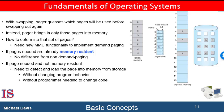We can use a valid-invalid bit scheme for this purpose. When the bit is set to valid, the associated page is both legal and in memory — previously valid just meant a legal address, but now valid means it is both legal and in memory. If the bit is set to invalid, the page is either not a valid memory request, or it is valid but currently in secondary storage, meaning it is not in the logical address space of the process.